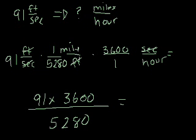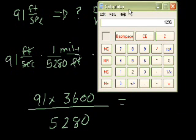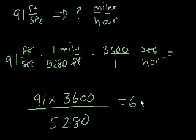And this time around, I'm actually going to use a calculator. Let me bring up the calculator just to show you that I'm using a calculator. So if I say 91 times 3,600, that equals a huge number, divided by 5,280. So 91 times 3,600, divided by 5,280, 62.05. So that equals 62.05 miles per hour.